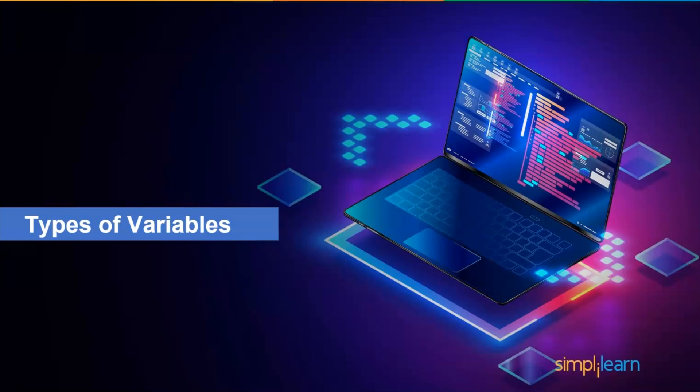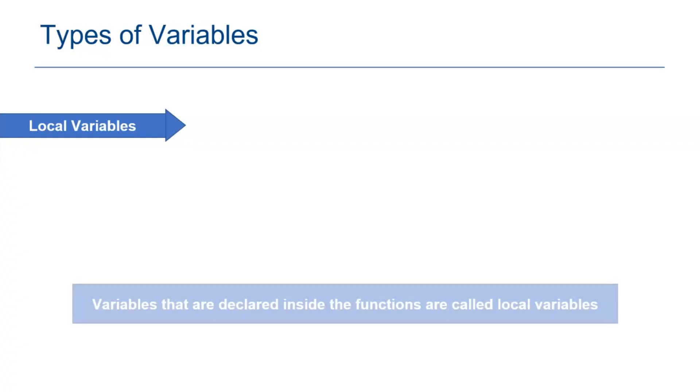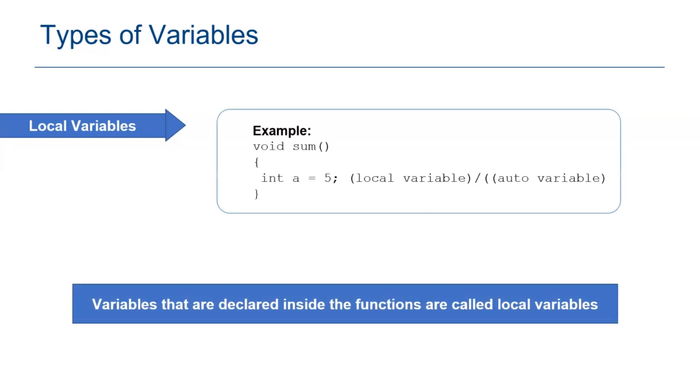Let me now move on to the types of variables in C. There are 5 types of C variables. Variables that are declared inside the functions are called local variables. In this example, we have declared variable y inside the function sum that holds the value 5.